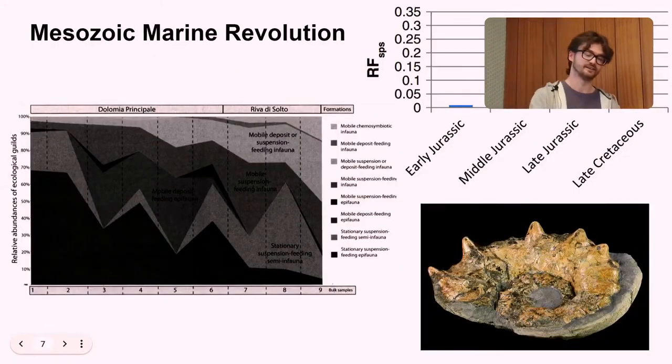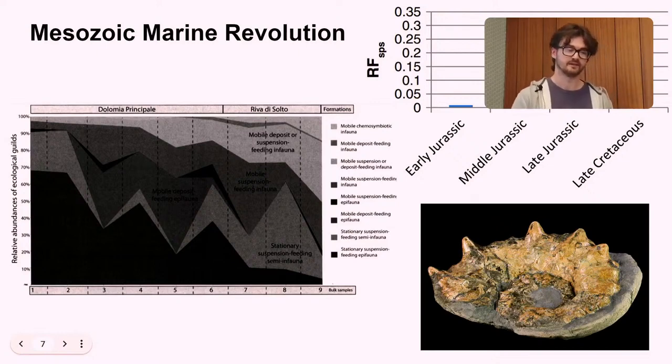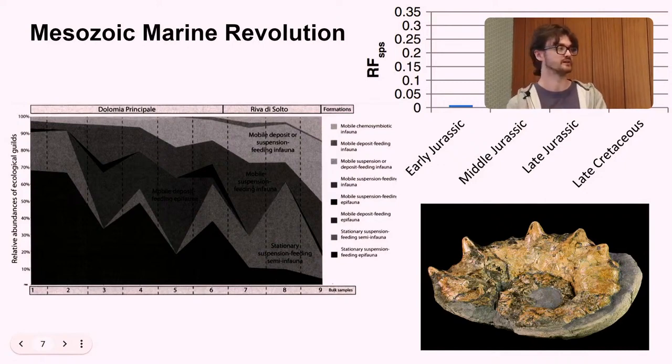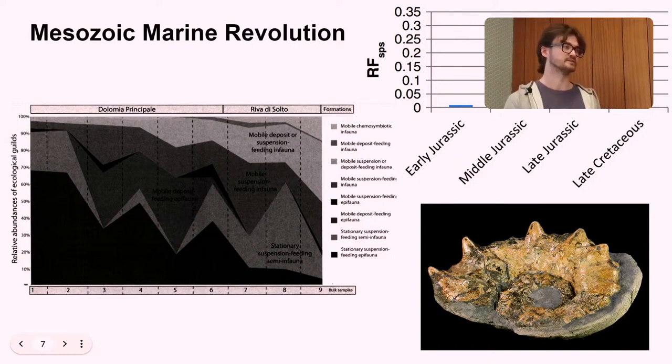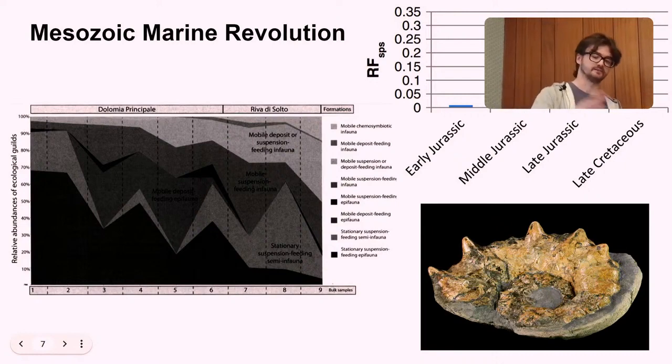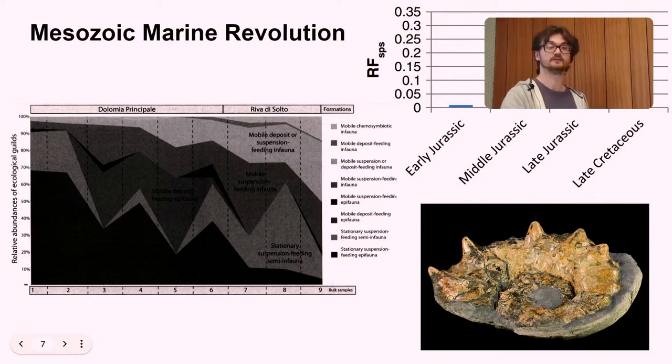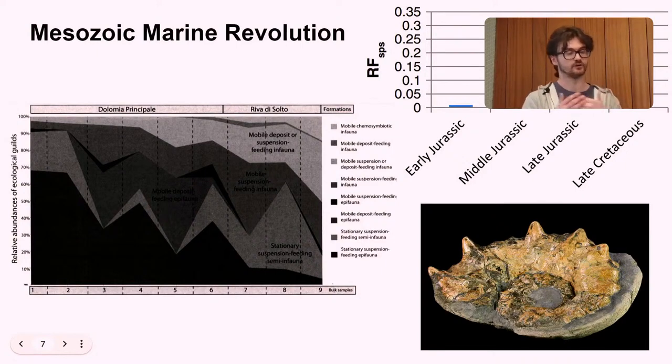All right, so let's talk about the Mesozoic marine revolution. So throughout time, various events have changed ecosystem structure. A big one was the end Permian mass extinction. So the most devastating mass extinction in Earth's history. And that completely disrupted the ecosystems of the time. So the Mesozoic marine revolution is another one of these events that changed ecosystem structure. And it actually brought about the ecosystem structure that we still have today.